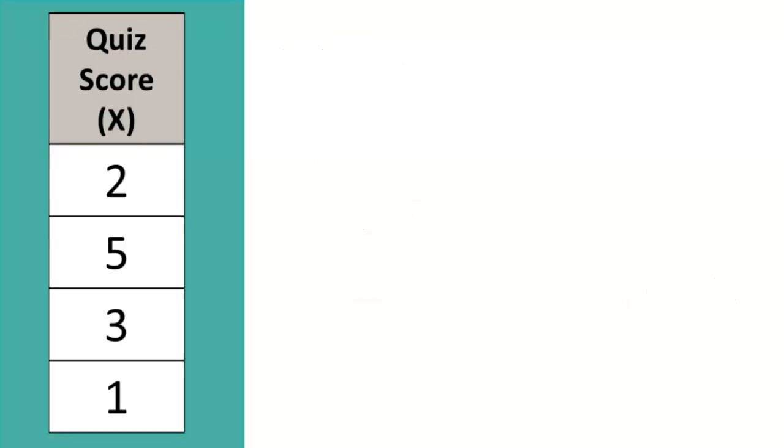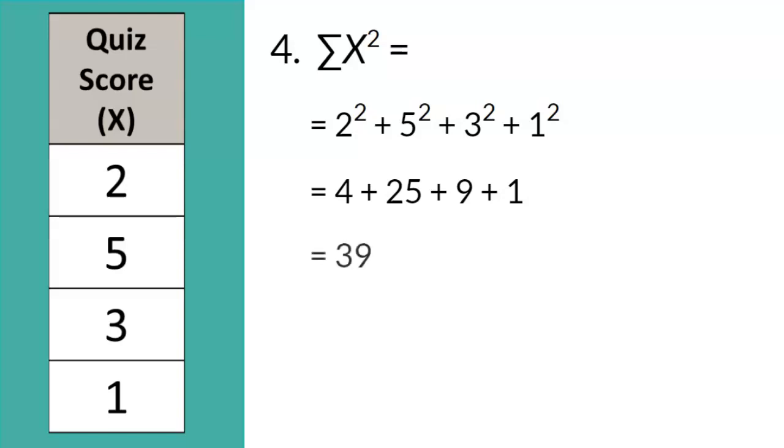Now, let's take it up a notch and make this more interesting. Question 4 is asking us to take the sum of X squared. In other words, we need to square each individual X score first before we do any summation. Once we square each X score, then we add them up and the final answer here is 39.